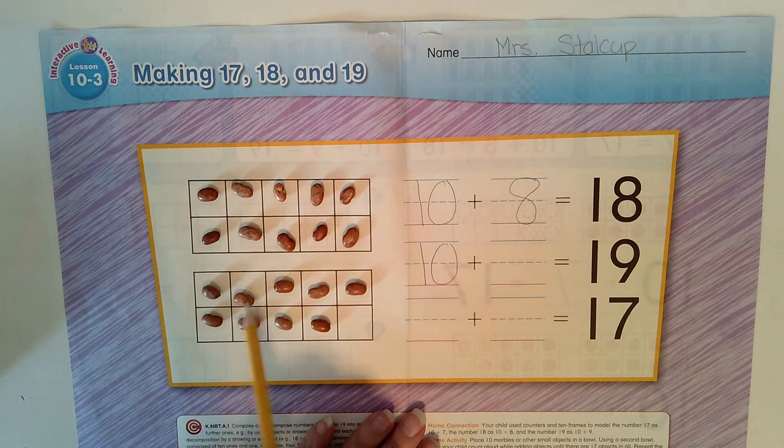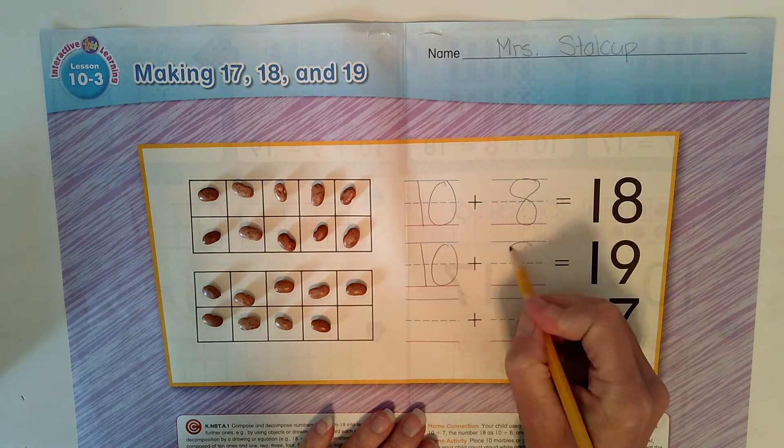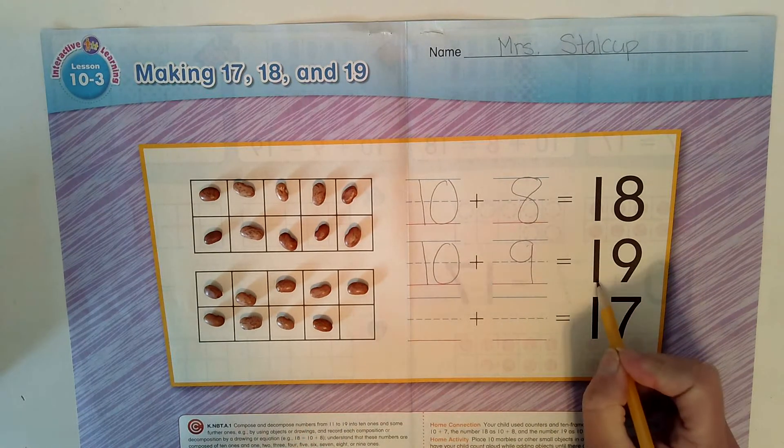Did you guess 9? If you did, good job. 1, 2, 3, 4, 5, 6, 7, 8, 9. 10 plus 9 equals 19. 10, 9.